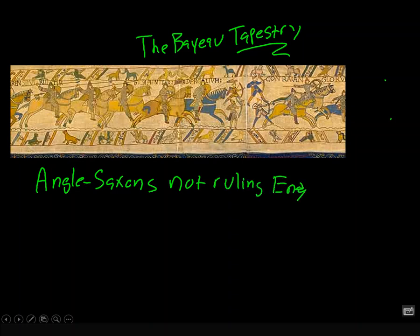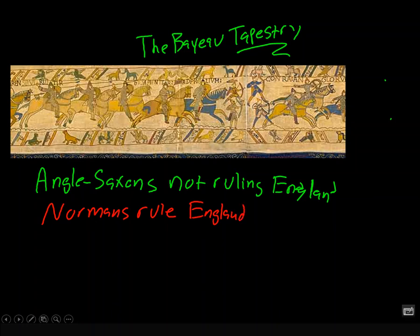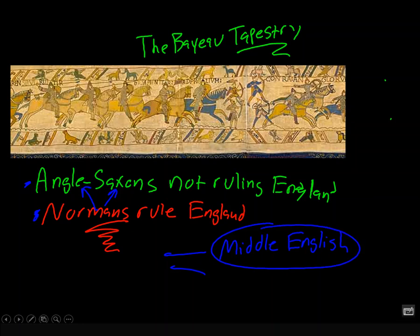So instead, William, who speaks French, becomes the king of England — Normans rule England. What does all this have to do with the English language? The Anglo-Saxons were Germanic people who spoke something called Old English, a Germanic form of the language. But the Normans spoke French. The Norman French began to blend with the Anglo-Saxon Old English, that Germanic language. When you put Norman French with the Anglo-Saxon Germanic language, you begin to get Middle English — the language of Chaucer.